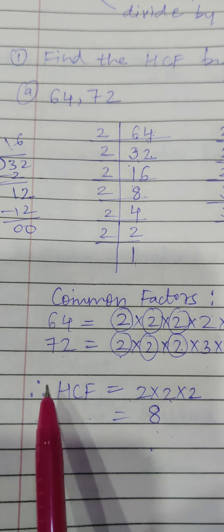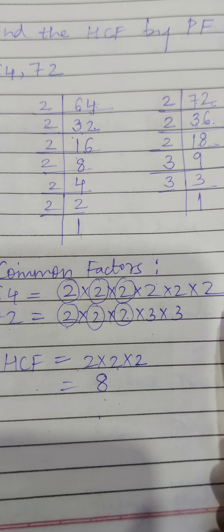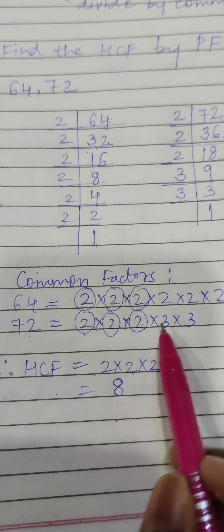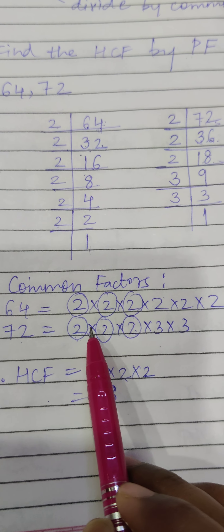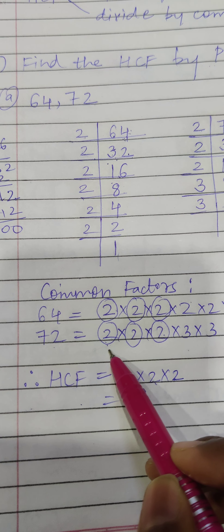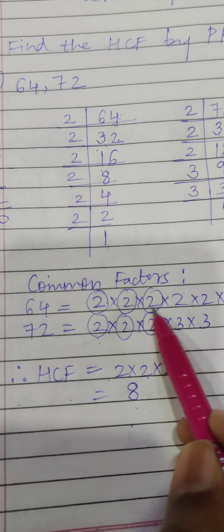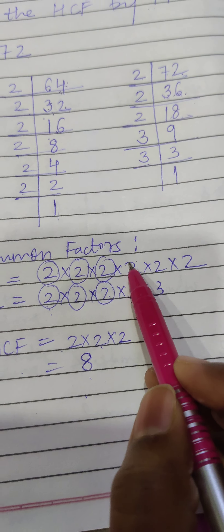We are going to write the given numbers and place their factors beside them. I have written the factors of 72 here. Now from the given factors, whatever common factors there are, we will mark them — I have marked with a circle. 2 is common in 64 and 2 is common in 72. Both 2s are common — I have done it once, second time again, third time also. Now here there is a 2 but not there, and here there is a 3 which is not there, so there is no more common factor.